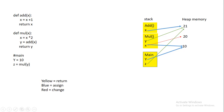Continuing down the code, y equals add(x) — another stack frame is created for the add function. Now there are two x variables in different stack frames. Python uses the LEGB rule to search for names: first Local, then Enclosed, then Global, then Built-in. In this case, x is found in the local namespace of the add function.